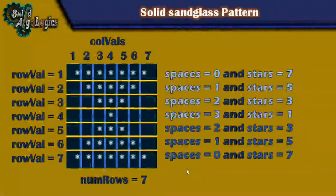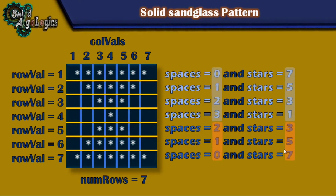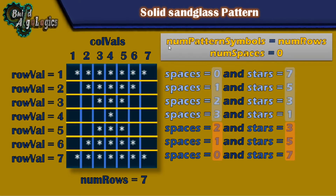For our second solution, taking numbers as seven: for the first row, spaces are zero and stars are seven. For the second row, spaces are one and stars are five. For the third row, spaces are two and stars are three. For the fourth row, spaces are three and stars are one. So spaces increment by one each time and stars decrement by two. From row four onward, this behavior reverses — spaces decrement by one and stars increment by two.